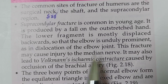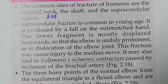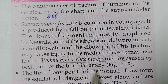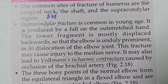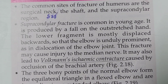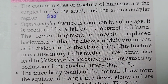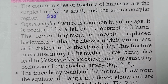This fracture may cause injury to the median nerve. It may also lead to Volkmann's ischemic contracture, caused by occlusion of the brachial artery. So in a supracondylar fracture: first, the fall occurs on the outstretched hand; second, the lower fragment displaces backward making the elbow prominent; third, there is median nerve injury; and fourth, Volkmann's contracture due to brachial artery occlusion.